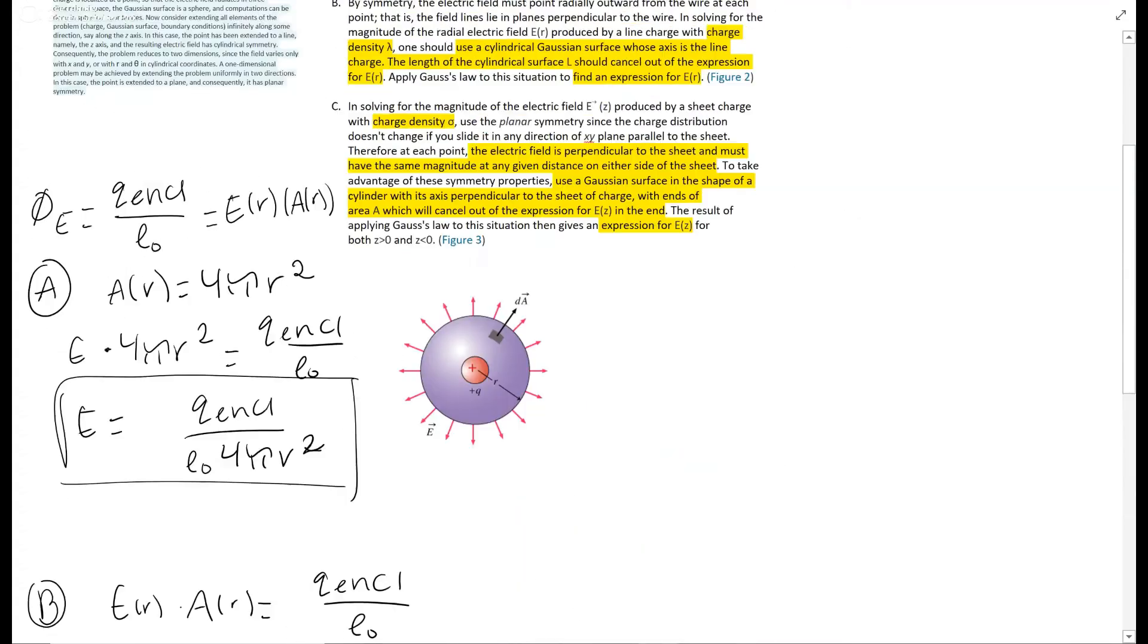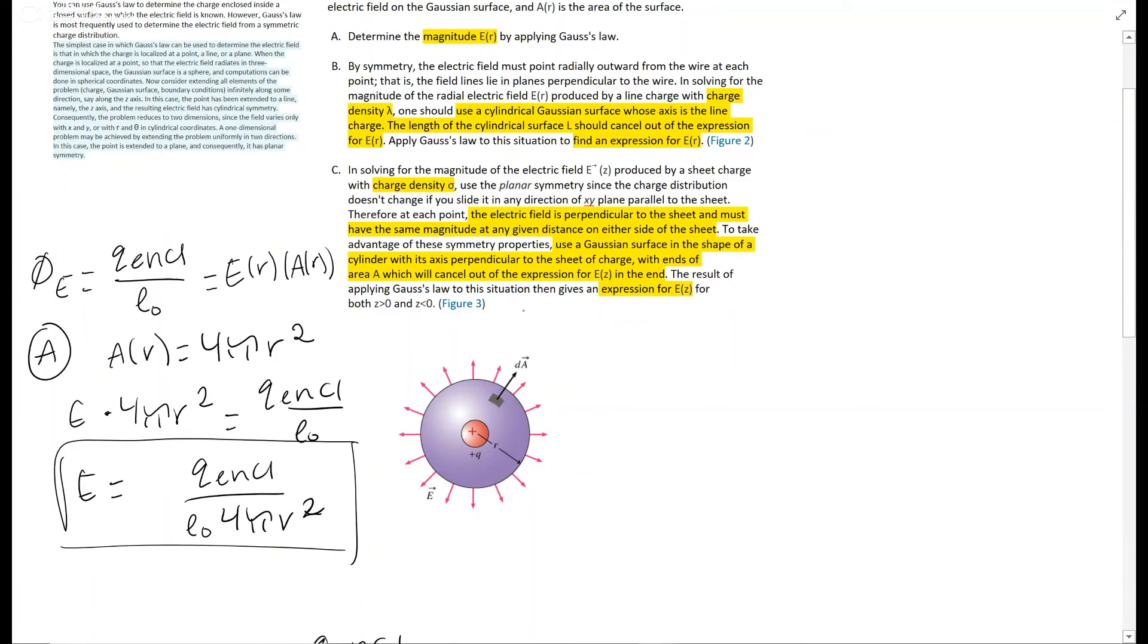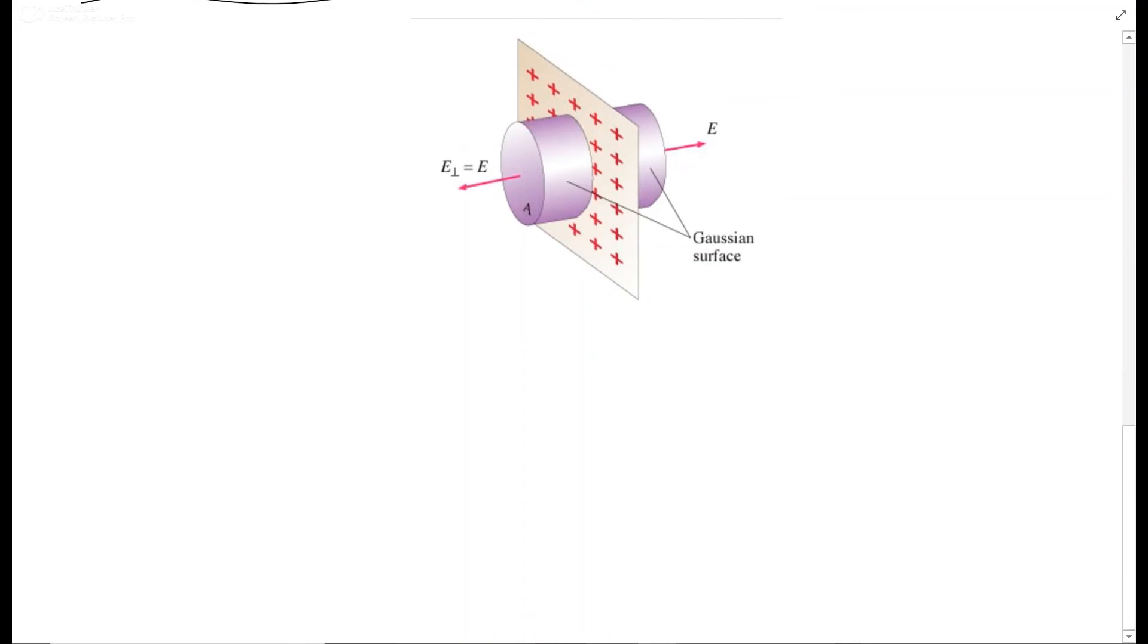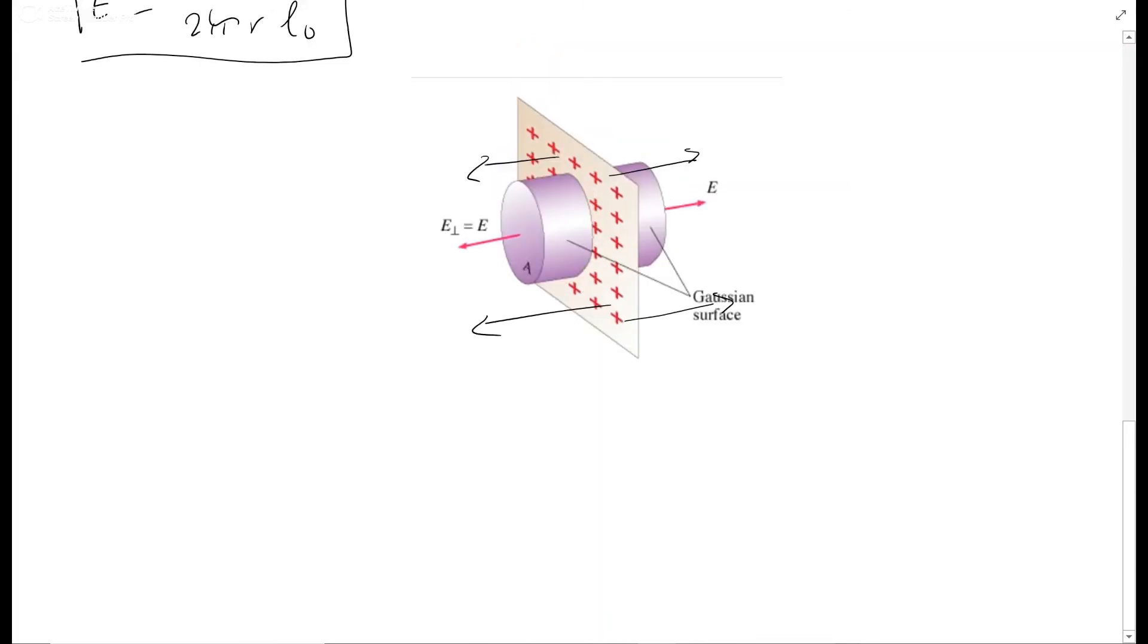Now C is once again asking for this expression of E_z, but we are using this diagram. It's a cylinder, but now the electric field is vertical. So the electric field is now pointing out this way and this way. Because this is positive and points away from positive. So these red arrows are actually the direction of the electric field.